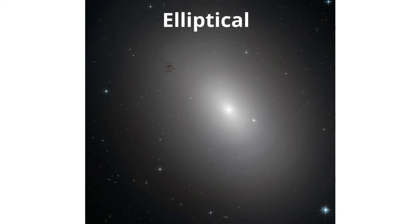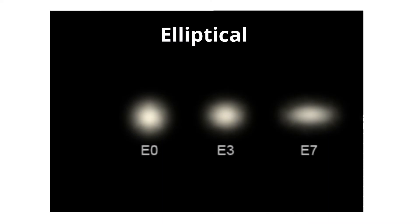Elliptical galaxies are classified with the letter E, and then they're further classified from E0 to E7. E0 are the most spherical and E7 are the most elongated.